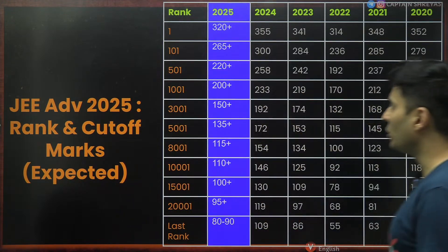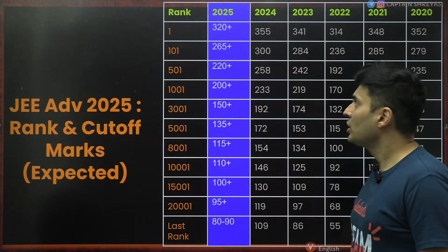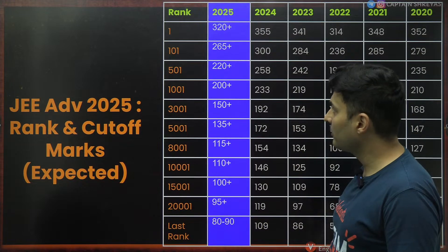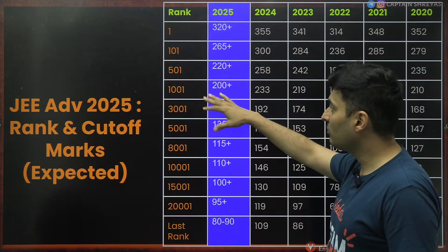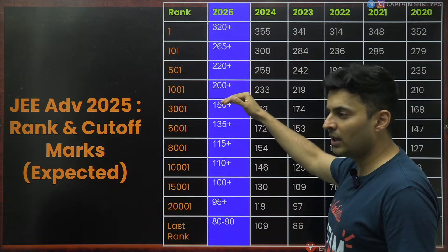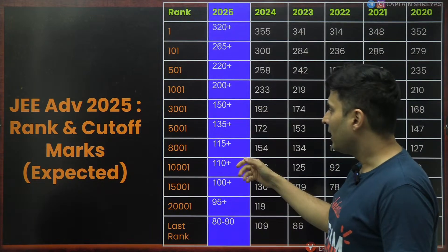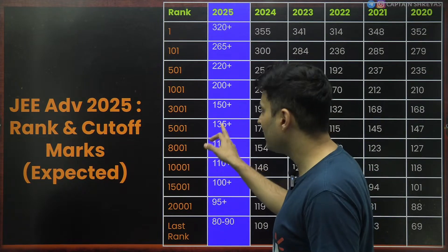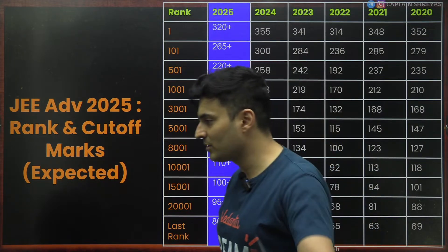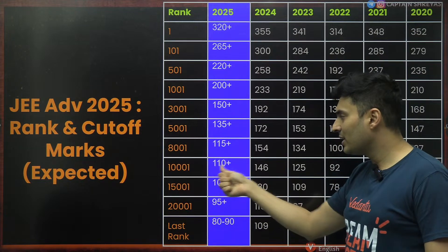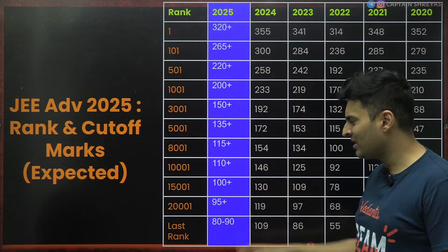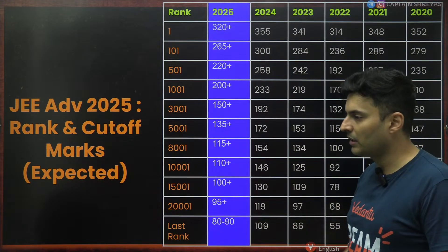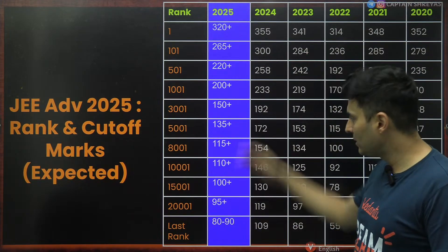Expected cutoffs this year: Rank 1 requires 320+ out of 360. Around Rank 101, approximately 265. Below Rank 1000, you need about 200 marks. Below Rank 5000, above 135 marks — those scoring around 135 should be close to Rank 5000. Rank 10,000 corresponds to around 110, Rank 20,000 to 95+, and the ultimate qualifying cutoff is expected around 80-90 marks.